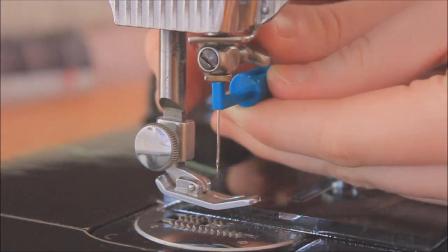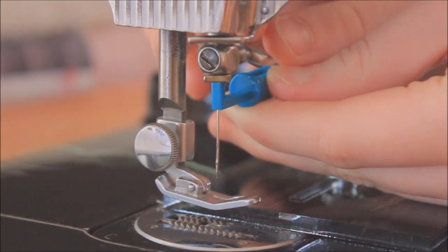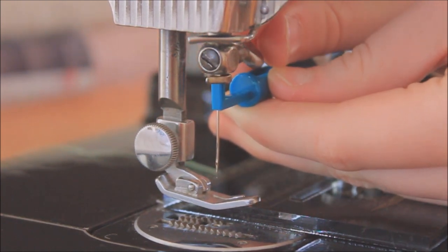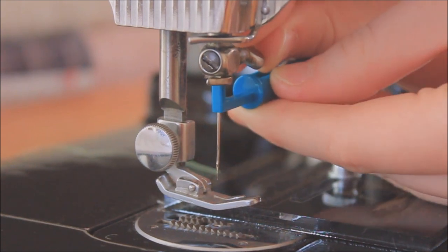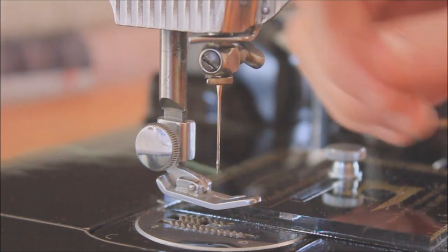With the needle threader still holding the needle in place, tighten the needle clamp as tight as you can. Remove the needle inserter and double check that the needle clamp is tightened all the way down.